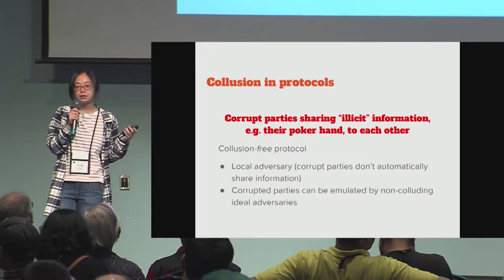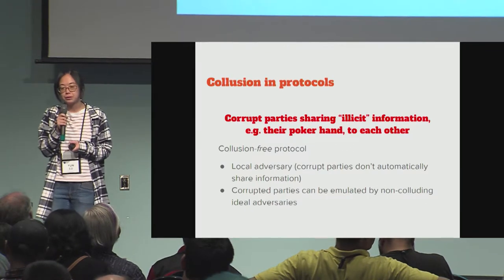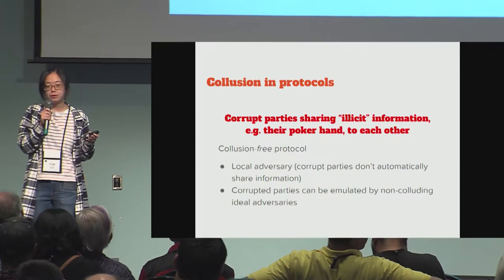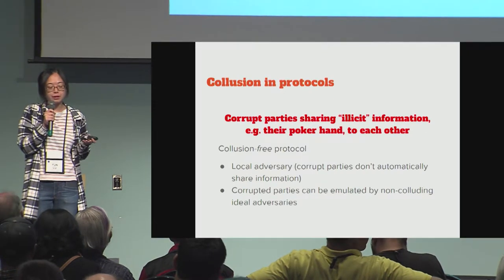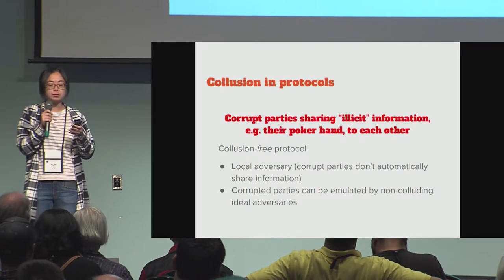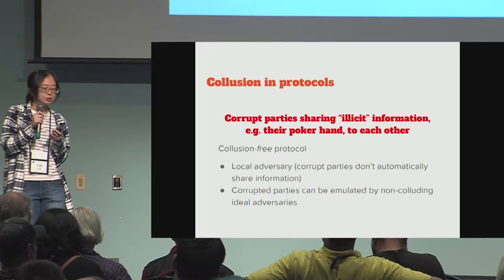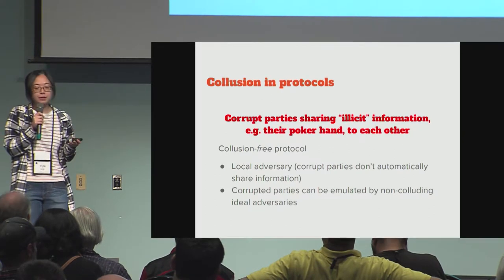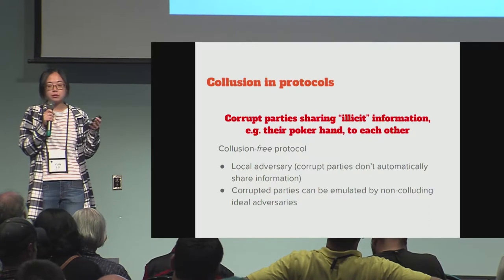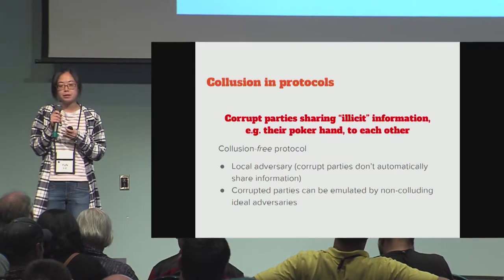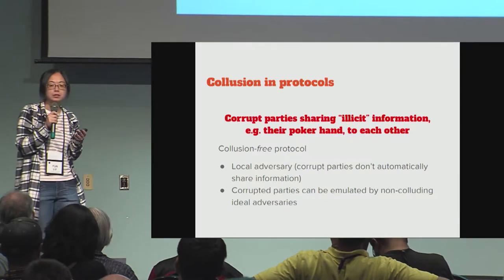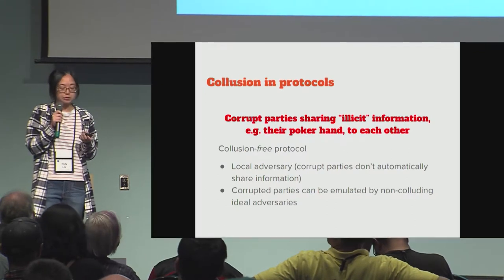A collusion-free protocol is one where, if you have a local adversary — that is, an adversary where the corrupt parties don't automatically share information — then you can prove that corrupted parties can be emulated by non-colluding ideal adversaries.